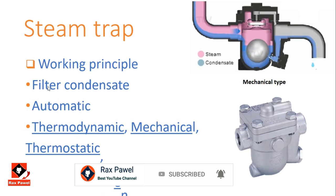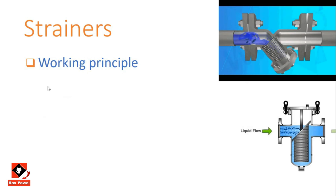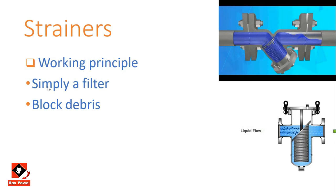Strainers working principle: they are filters used to prevent impurities and debris from entering the flow path. If the fluid contains impurities, a strainer must be installed in the pipeline before a pump. Strainers can also be found in foot valves.